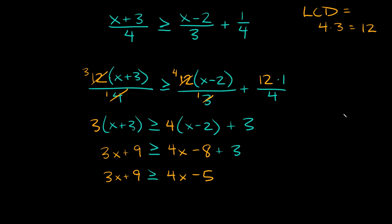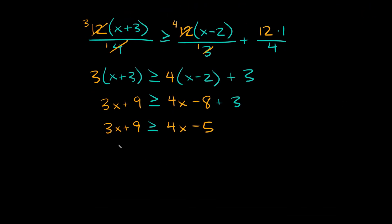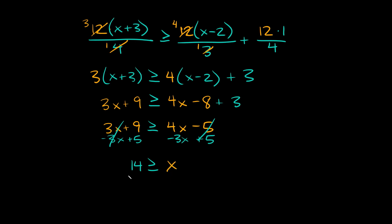So we have this simpler linear inequality to solve now. Let's move all x terms to the right side — subtract 3x from both sides; those cancel out. And let's move the numbers to the left side — add 5 to both sides; those cancel out. So we're left with 9 plus 5, which equals 14, and that's greater than or equal to 4x minus 3x, which equals x. So our final answer is 14 is greater than or equal to x.